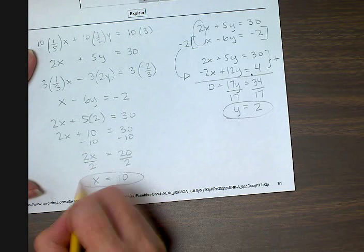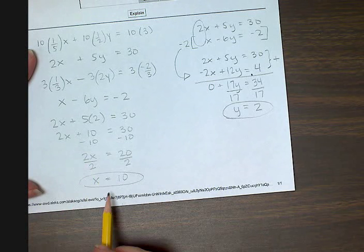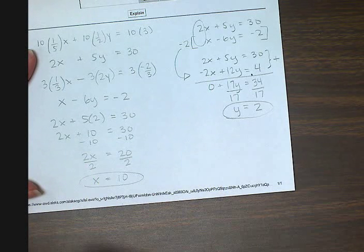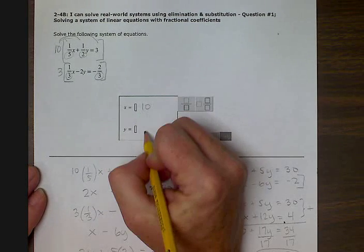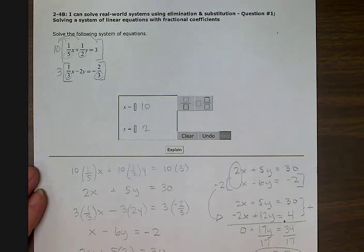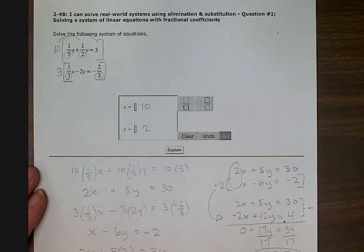So those are my two answers. X is ten and y is two. That point where x is ten and y is two is the solution to those two equations. That's where those two lines cross this point, ten, two.